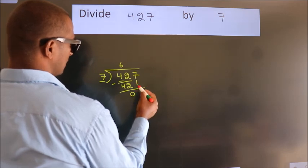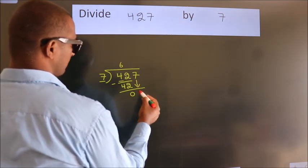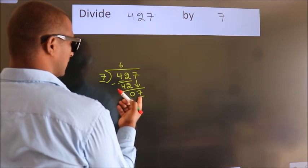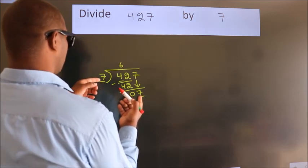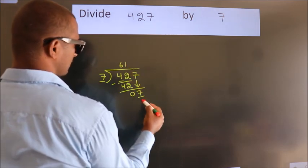After this, bring down the beside number. So, 7 down. So 7. When do we get 7? In 7 table, 7 once 7.